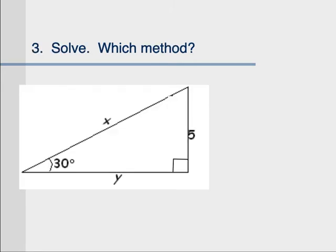Question 3. Which method would you use to solve this one? If you said special right triangles, excellent. Notice how if this corner is 30 and this corner is 90, to add up to 180, the missing one would have to be 60. So it's a 30, 60, 90 triangle.